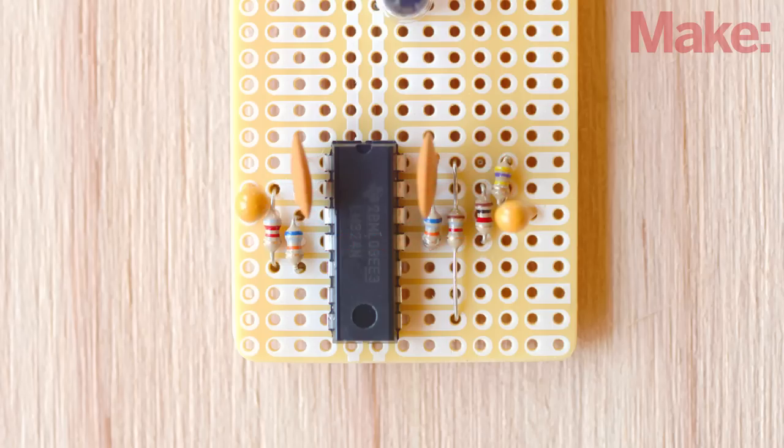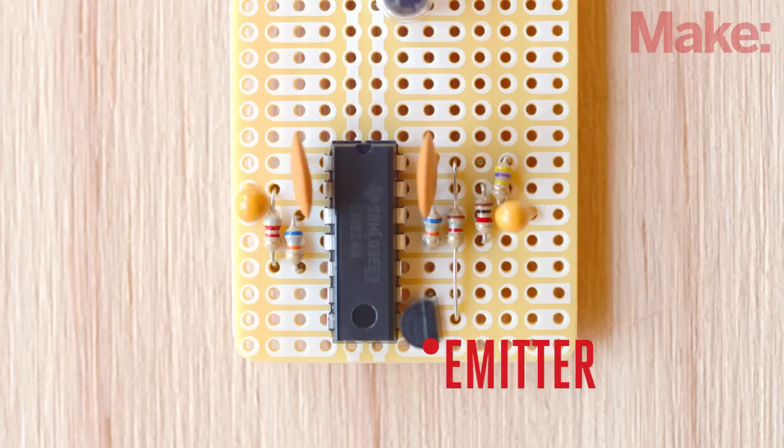Finally, install the NPN transistor as shown, making sure it's oriented correctly, with the emitter lead next to the PCB edge and the 1.8 kilohm resistor lead connected to the middle or base pin.